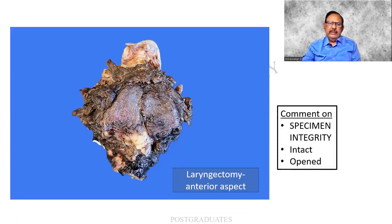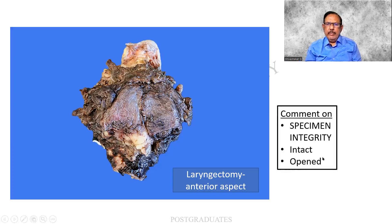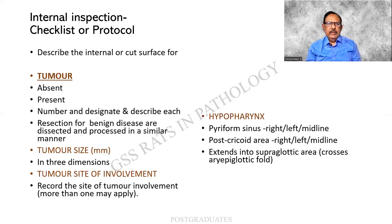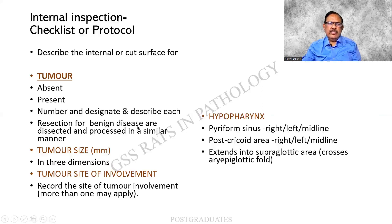A beautiful picture — this is the anterior aspect, where I am finding a larynx completely covered by muscle, fascia, and so on. It is almost complete. Whenever we do a grossing, we are supposed to comment on the integrity of the specimen, whether it is intact or open. This is the laryngectomy anterior aspect. A checklist is always needed — it can be similar to your CAP protocol. Tumor: whether present or not, number, size, etc.